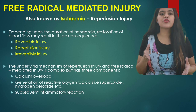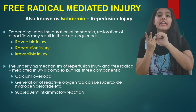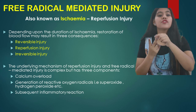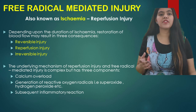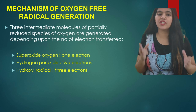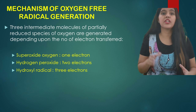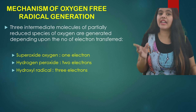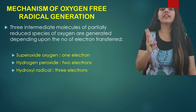The mechanism of reperfusion injury and free radical mediated injury is complex, with three components. First, calcium overload — calcium influx into mitochondria prevents ATP generation. Second, generation of reactive oxygen radicals such as superoxide and hydrogen peroxide, leading to subsequent inflammatory reactions. Regarding the mechanism of oxygen free radical generation, there are three intermediate molecules: superoxide, which releases one electron; hydrogen peroxide, releasing two electrons; and hydroxyl radical, releasing three electrons. Oxygen is converted to superoxide via auto-oxidation through the mitochondrial electron transport chain. Superoxide is then converted to hydrogen peroxide by mitochondrial enzymes, which is further reduced to water in peroxisomes. Hydrogen peroxide is converted to hydroxyl radical by two processes: radiolysis of water and reaction with ferrous ions, known as the Fenton reaction.